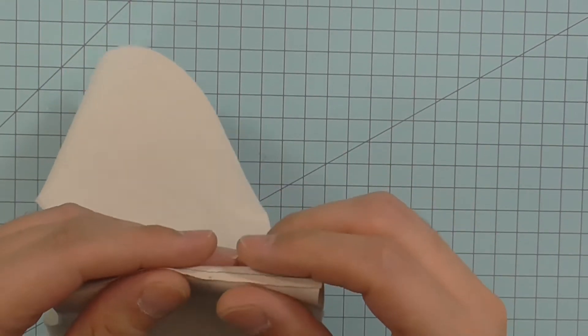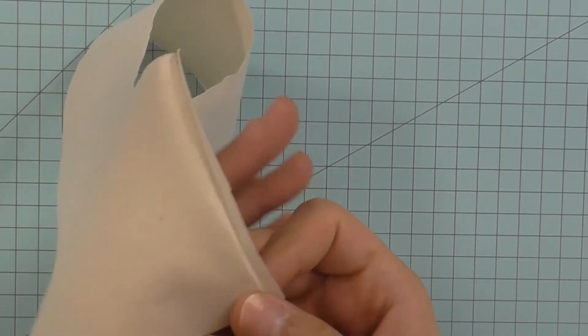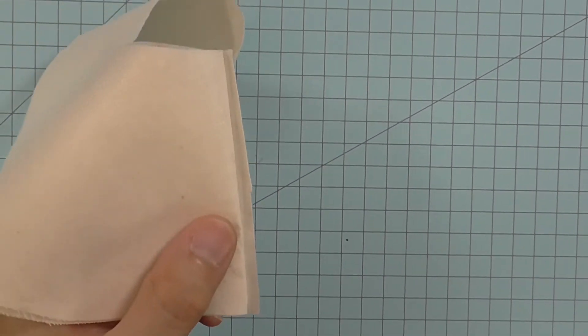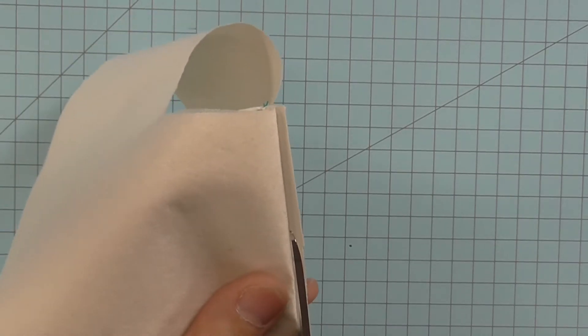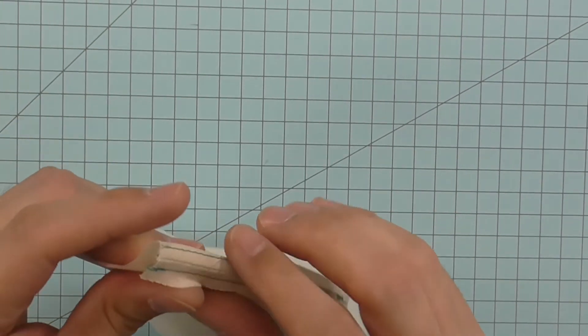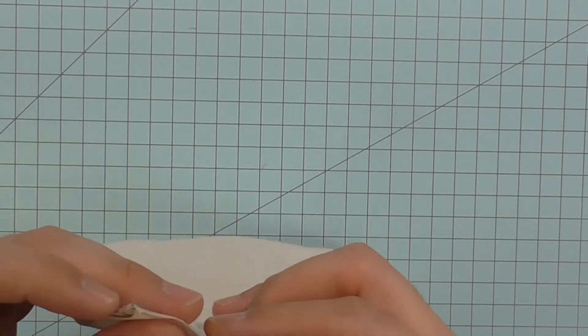We need to eliminate the excess fabric beyond the topstitching on the inside of the brim. This helps the wire pass through that seam more easily. You only need to trim on the outer edge of the hat brim. Do this to both sides of the topstitching.